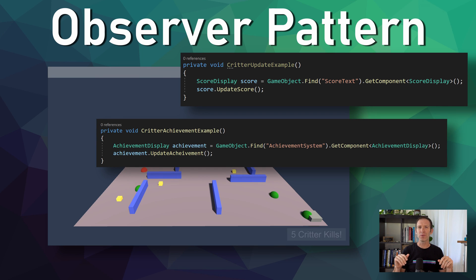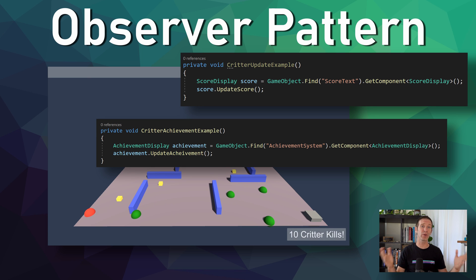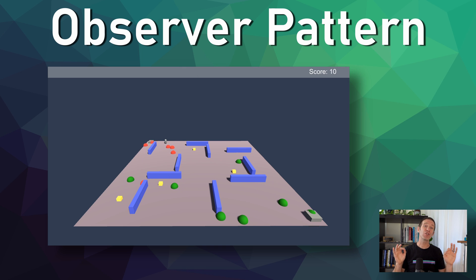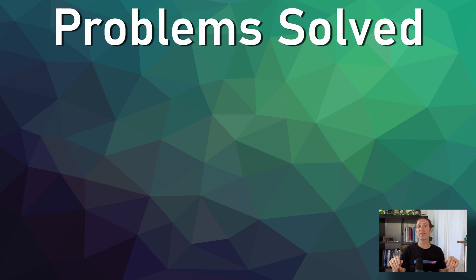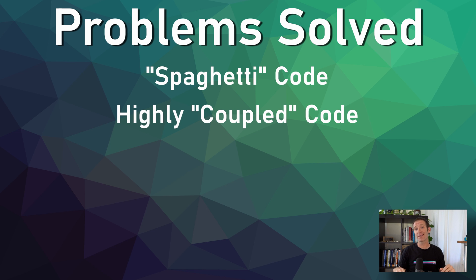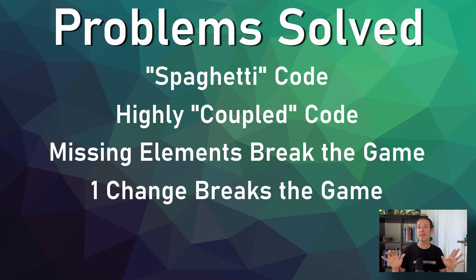But what if there is an achievement system too? That system wants to display a message for the first kill, every five kills, and then every ten after that. Do we link the critter to the achievement system? Does the achievement system connect to the UI element? What if you have an audio system that plays a sound effect each time the score goes up? You can probably start to see the problem — and it gets even worse. If the UI element changes or the designer forgets to put the achievement system into the scene, errors will get thrown and the game will likely break. The result is a mess of spaghetti code that is highly coupled or interconnected.